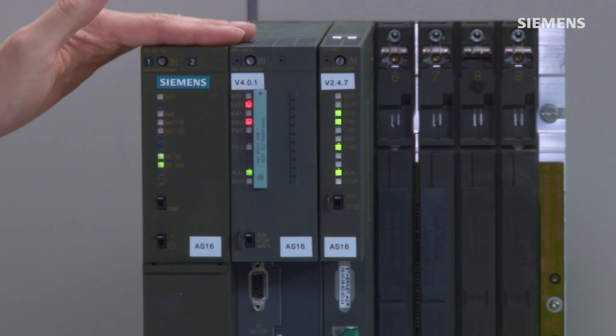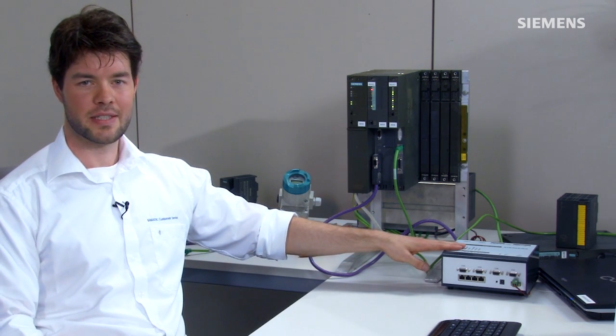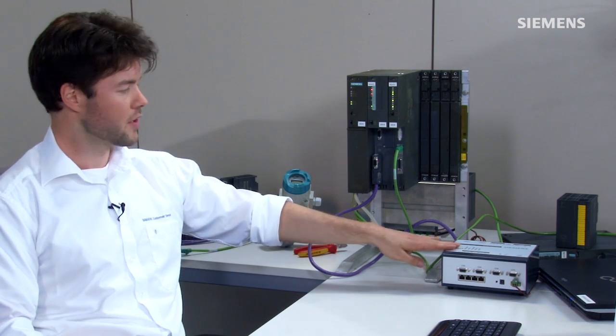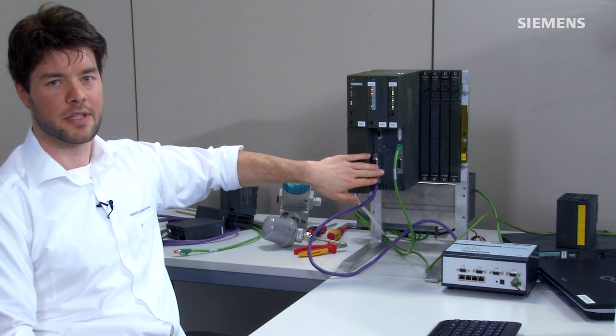For testing my automation software, I use a real hardware controller, a so-called hardware-in-the-loop solution. To connect to my real controller, I use an interface module which enables coupling to the PROFIBUS DP interface.